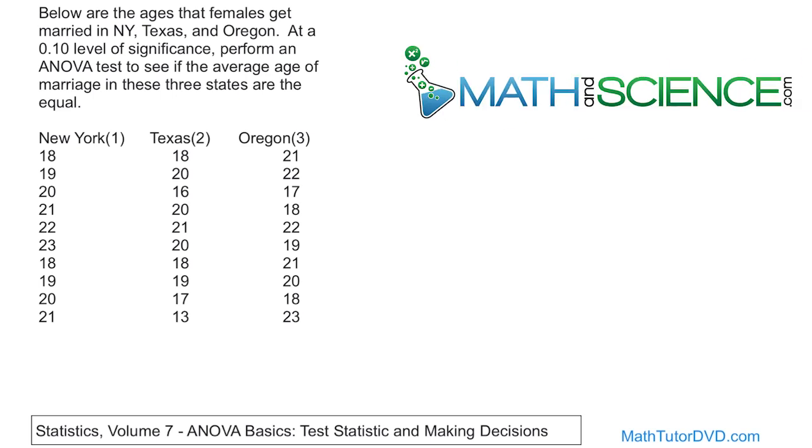So here's our original problem again. We have the ages of the samples that we've taken in three different states, the age that they get married, and we're trying to do a test at the 0.1 level of significance, which is 90% level of confidence. We'll do an ANOVA test to see if the average age of marriage in these three states are equal or not. So we're going to use everything that we've done up to this point and teach you how to create the test statistic and the rejection region in order to figure out if this is a rejection or not of the null hypothesis.